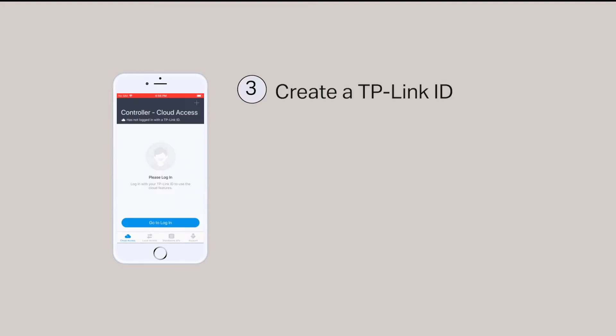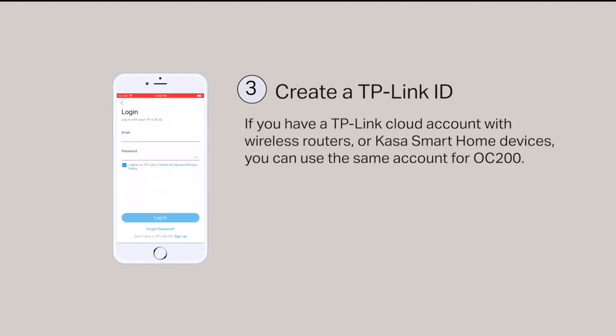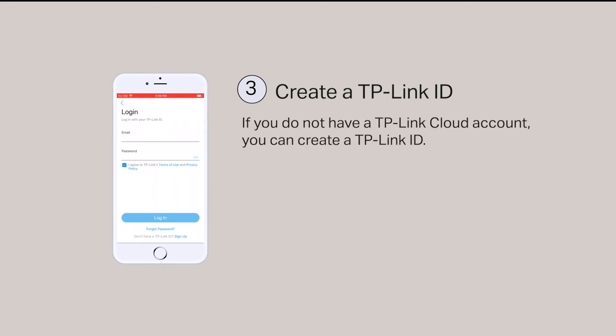Step 3: Create a TP-Link ID. On the Cloud Access page, click on Go to Login. If you have a TP-Link Cloud account being used with our wireless routers or Kasa smart home devices, you can use the same account for the OC200 and skip this step. Otherwise, you'll need to create a TP-Link ID.